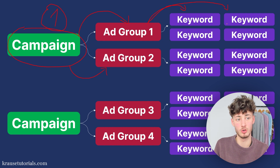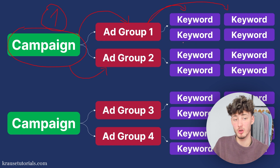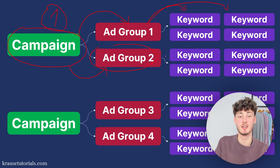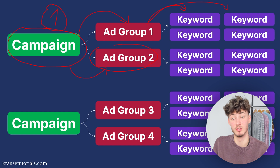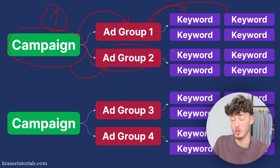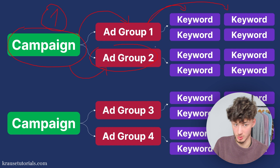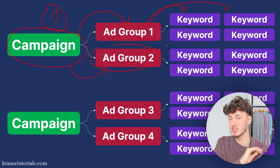Usually you won't have more than eight keywords per ad group, and not less than four — if you have more than eight, open a new ad group; if less than four, it isn't worth creating a separate ad group. Understanding this structure is super important, so if you have any questions leave them in the comments below. Now we can continue by setting up our keywords.